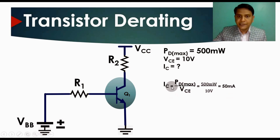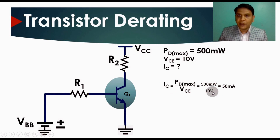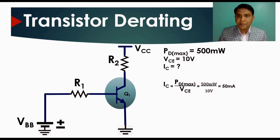The collector current is given by IC = PD_max / VCE. With PD_max = 500 milliwatts and VCE = 10 volts, the maximum collector current is IC = 500 mW / 10 V = 50 milliamperes.